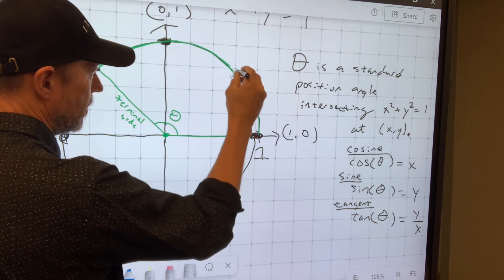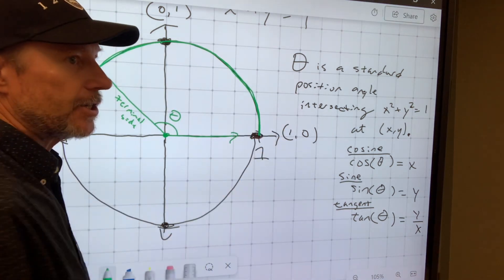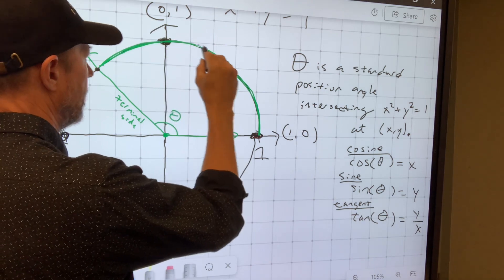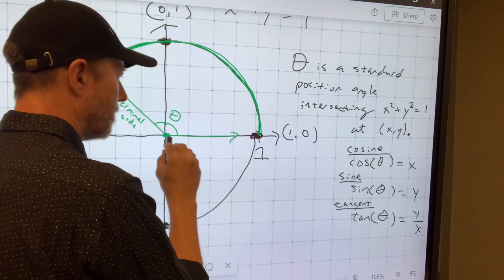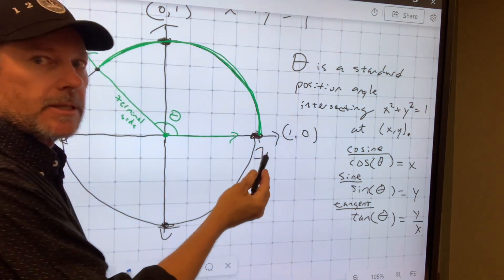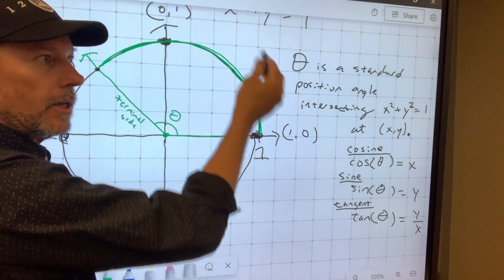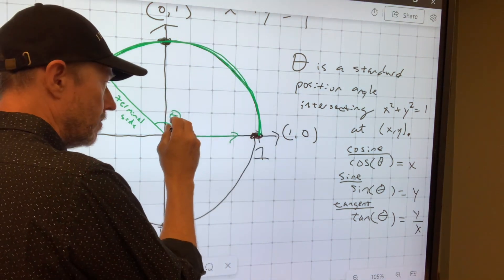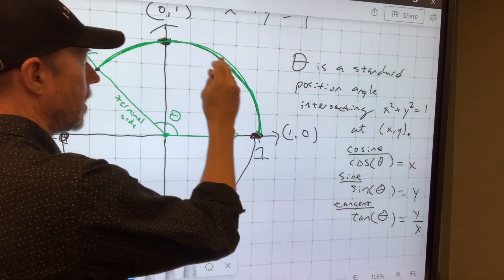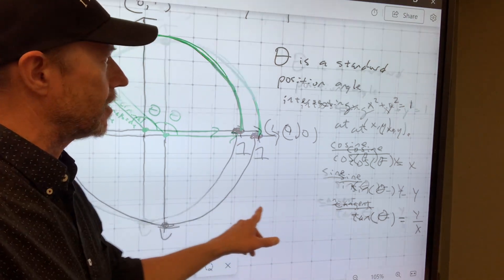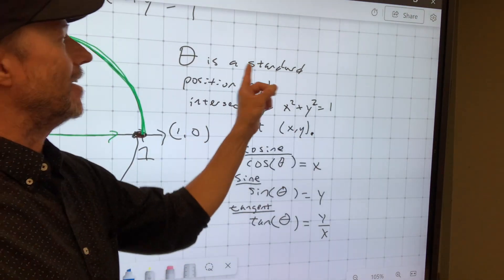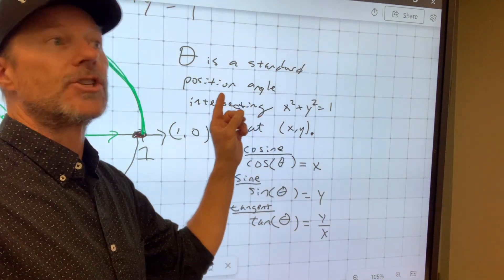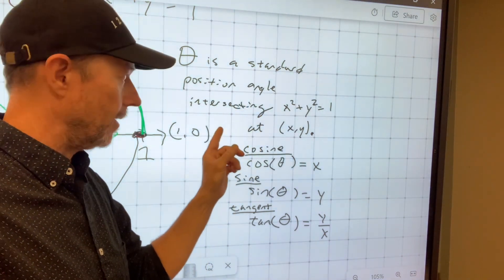Because remember, the definition of a radian measure of an angle is the arc length, how long this arc is, divided by the radius. But the radius is one. So arc length divided by one is just arc length. So the radian measure of this angle also corresponds to the arc length.